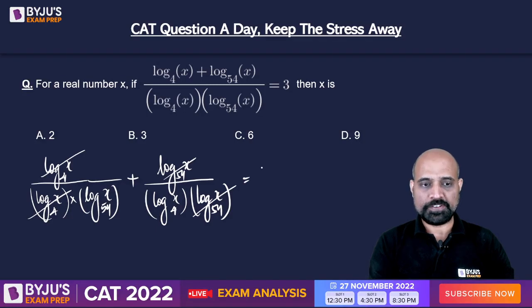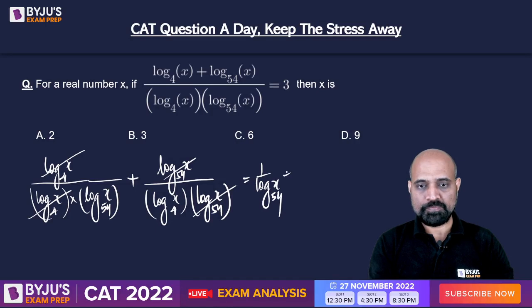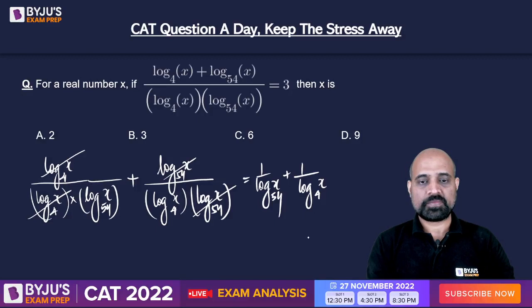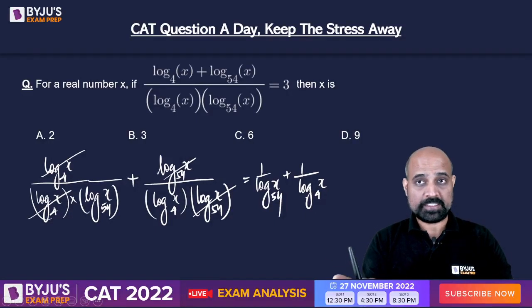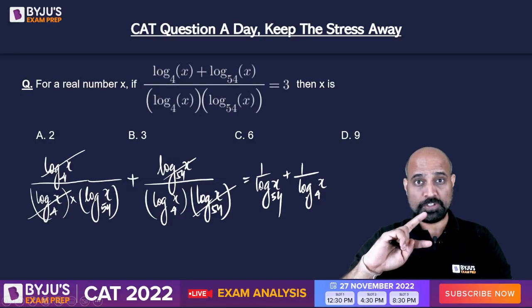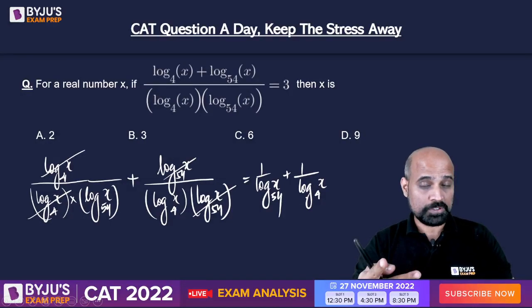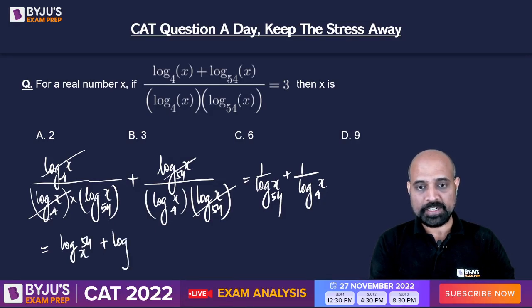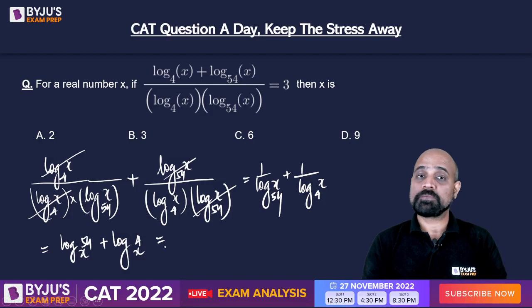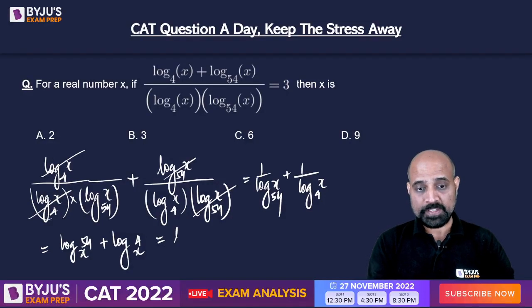We are left with 1 upon log X to the base 54, plus 1 upon log X to the base 4. Now the values are the same — that is X — for the log, while the bases are different. If I want to interchange them, all I have to do is take the reciprocal. So the first fraction can be written as log 54 to the base X, and the second one as log 4 to the base X.